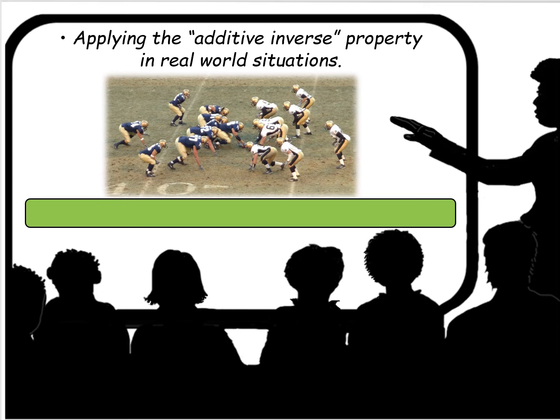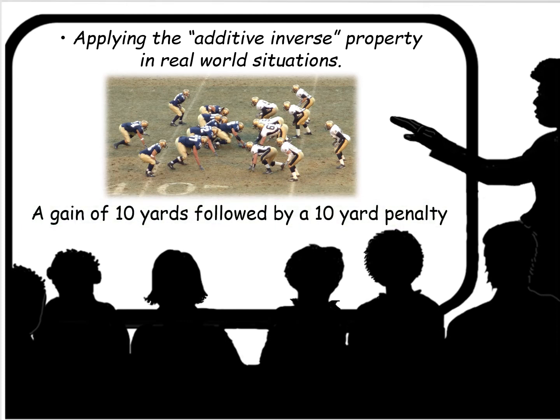Here's an American football game — the blue team is at 10 yards. If on this play they get a gain of 10 yards, where are they going to end up? They're going to end up at the 20 yard line. Next play coming up — a 10 yard penalty. They have to go back 10 yards. They started at the 10 yard line, went up to the 20 yard line, then lost 10 yards right back where they started. Positive 10 plus negative 10 — a gain plus a penalty — zero.